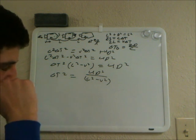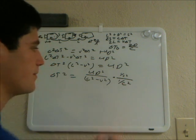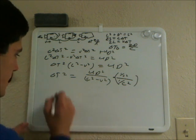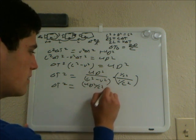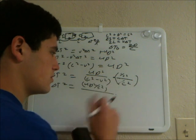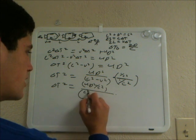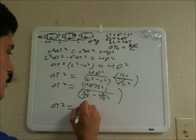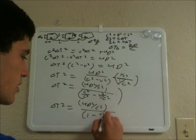Now a little mathematical trickery: on the right side, I'm going to multiply by (1 over C squared) divided by (1 over C squared), which is just 1. The top becomes 4D squared over C squared. Distributing the 1 over C squared on the bottom gives C squared over C squared minus V squared over C squared, which simplifies to 1 minus V squared over C squared. So delta T squared equals (4D squared over C squared) all over (1 minus V squared over C squared).